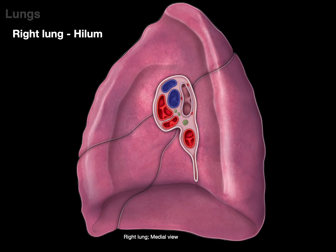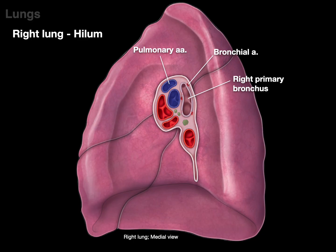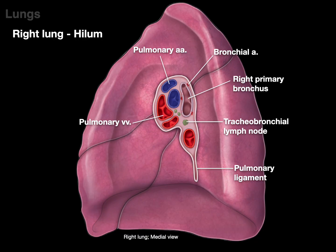The hilum is the part of a lung where air, blood, lymph, and nerves go in and out. There's the right primary bronchus, whose wall is supplied by the bronchial arteries. The pulmonary arteries on the right are in front of the right primary bronchus, and the pulmonary veins deliver oxygenated blood back to the heart. The tracheobronchial lymph nodes collect lymph from the lungs and airways — if there is cancer, tumor cells could be found here. And then there's the pulmonary ligament.